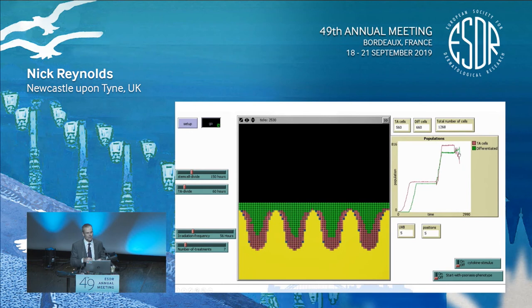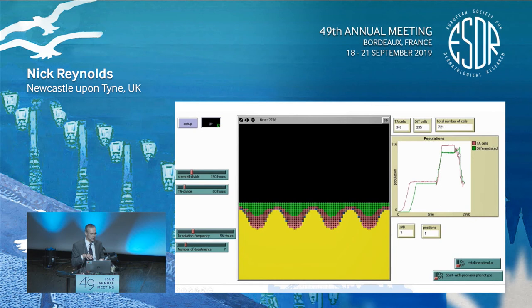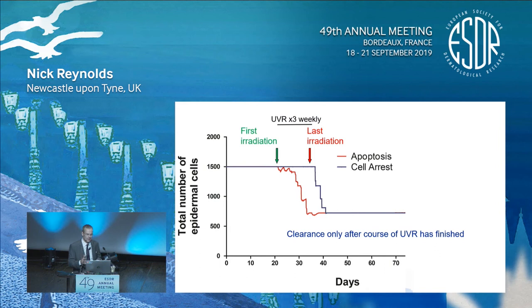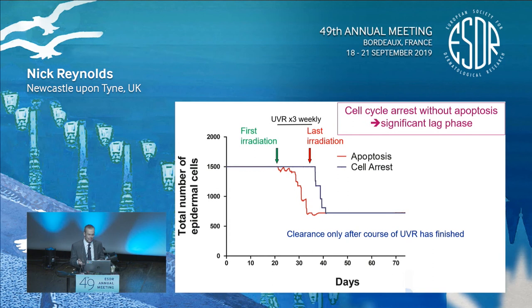The model is then ready again to receive another cytokine stimulus and develop into a plaque. Importantly, these states are stable. We can also get quantitative outputs and study the change in cell numbers over the radiation course. One question we asked was whether cell growth arrest could substitute for apoptosis and lead to similar changes. The answer is that it does lead to remodelling of the epidermis, but there's a significant lag phase such that remodelling doesn't occur until after the last irradiation — which clinically we know isn't what happens to our patients. So cell growth arrest alone doesn't seem to be the key mechanism.